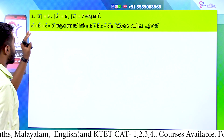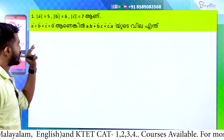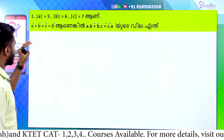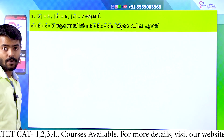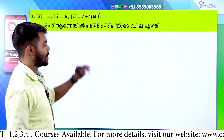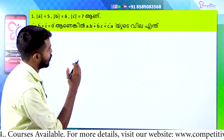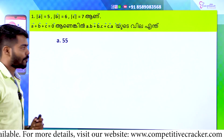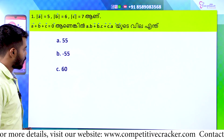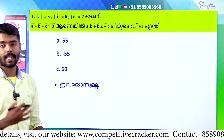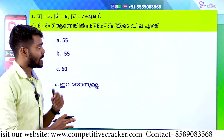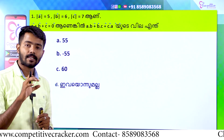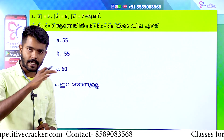The first question is: modulus of vector A equals 5, modulus of vector B equals 6, modulus of vector C equals 7. Vector A plus Vector B plus Vector C equals zero. Find Vector A dot Vector B plus Vector B dot Vector C plus Vector C dot Vector A.